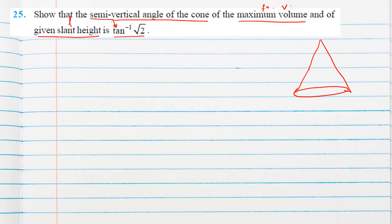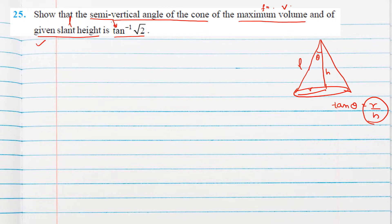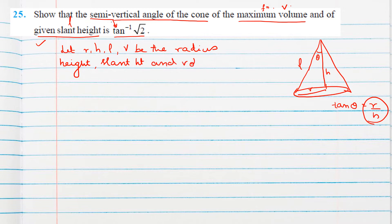Suppose this is height h, this is radius r, and slant height l is given. The semi-vertical angle theta satisfies tan theta = r/h, so we need to find r and h. Let r, h, l, and V be the radius, height, slant height, and volume of the cone respectively. The relationship between slant height, h, and r is: l² = h² + r².